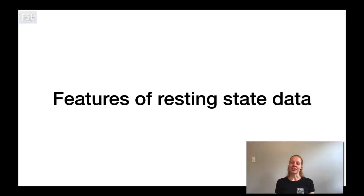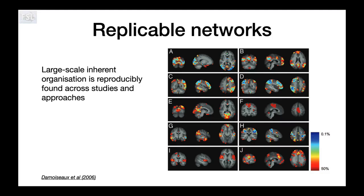In this next section I'll highlight a few key features of resting state fMRI data. The first feature is that networks found in the data are very replicable. This figure shows the percent variance when you perform the same type of resting state fMRI analysis on multiple different datasets. You can see that all of these networks, at least at their core, are found very robustly and reproducibly.